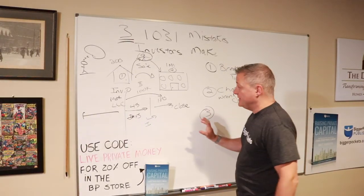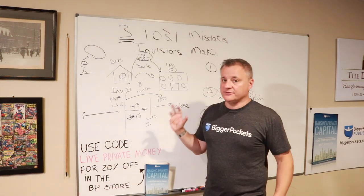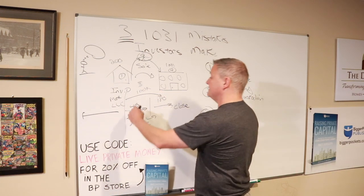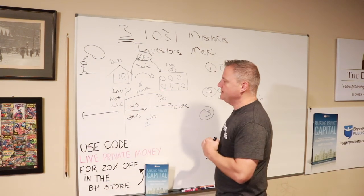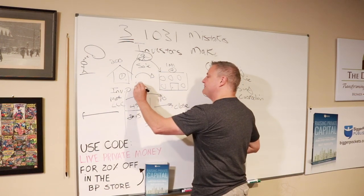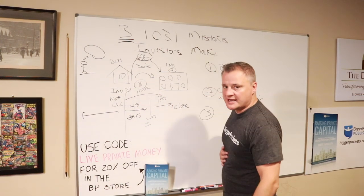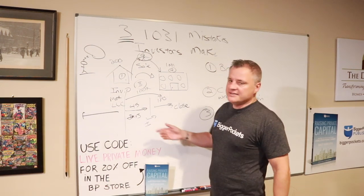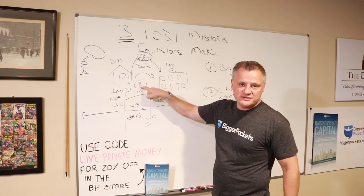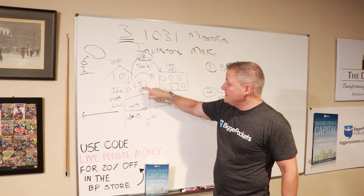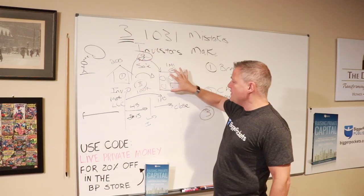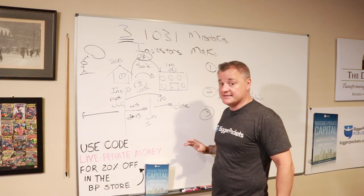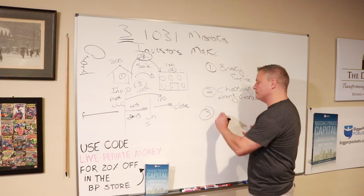The third mistake that people make is just in general misunderstanding the rules. I've seen people try and do 1031 exchanges and try to find a way to take a few of those dollars out for themselves. Can I take a few dollars out to put in my pocket or use it for the down payment on the new property? No, this money needs to live with the custodian and you can't use it for anything except for the actual closing activity when this property changes hands.